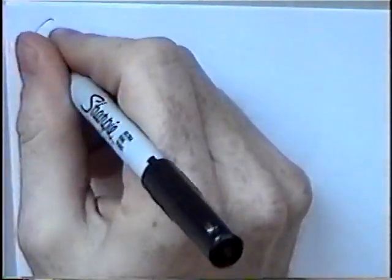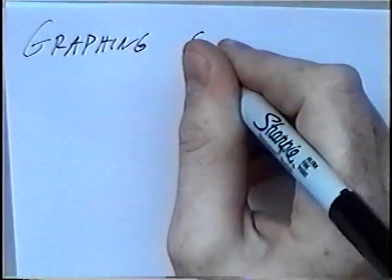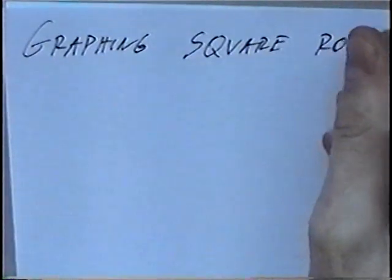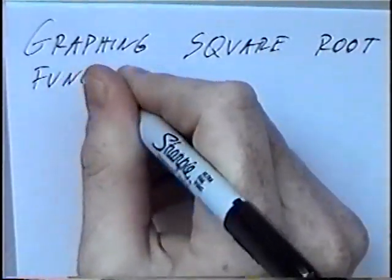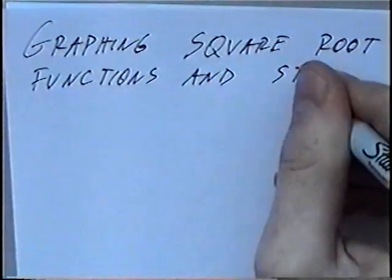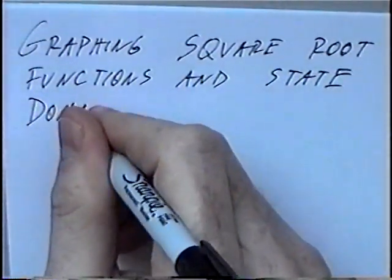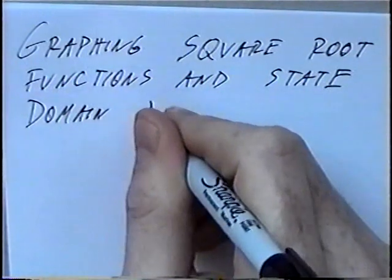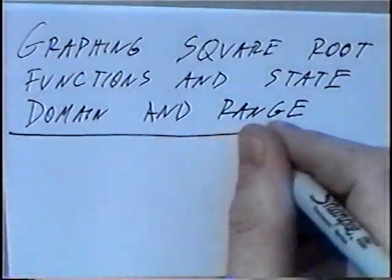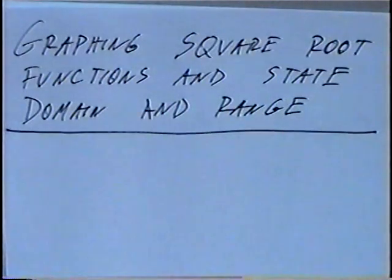The title of the first section today is graphing square root functions and stating domain and range. In this section we'll graph square root functions and we'll state the domain and range of those functions.